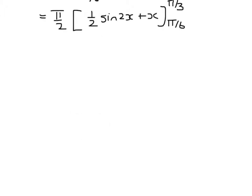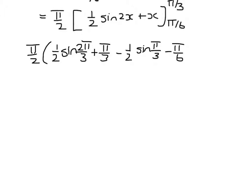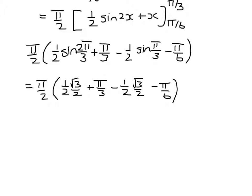Substituting in, we get pi over 2 times 1 half the sine of 2 pi over 3 plus pi over 3 minus 1 half sine pi over 3 minus pi over 6, which is, gathering together like terms, pi over 2 times pi over 6, so the volume is pi squared over 12.